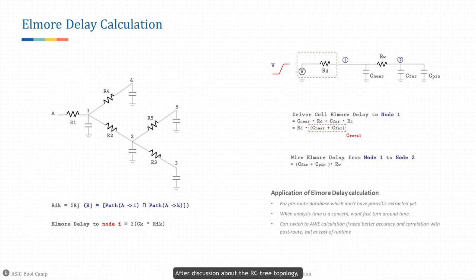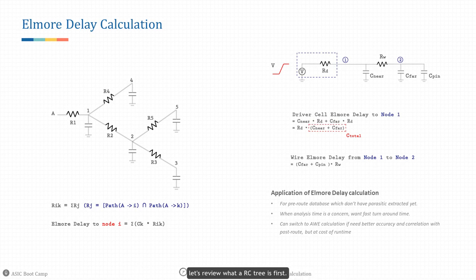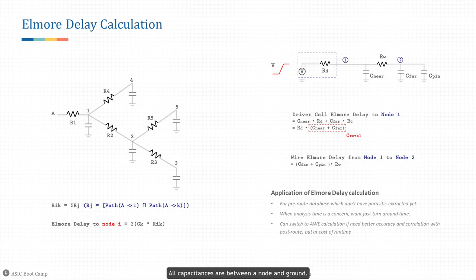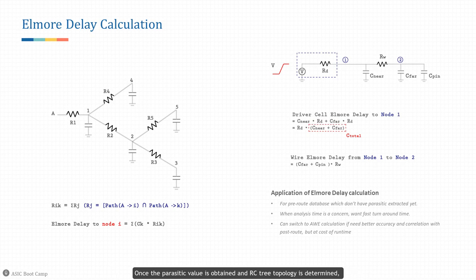Elmore delay calculation: after discussion about RC tree topology, let's look at the algorithm EDA tools use to calculate delay. Since all RC delay calculation methods are based on RC trees, an RC tree must have a single input source, no resistive loops, and all capacitances between a node and ground — both wire load model and SPEF RC networks meet these requirements. Once the parasitic value is obtained and the RC tree topology is determined, we can calculate wire delay. The easiest way is to use the Elmore delay model, which uses the first moment of the RC tree transfer function to estimate the RC delay.